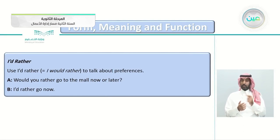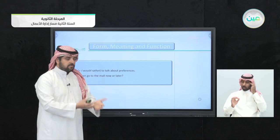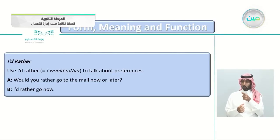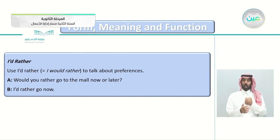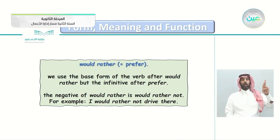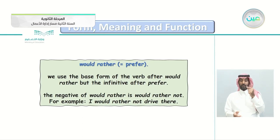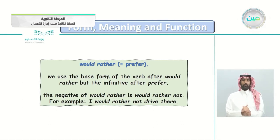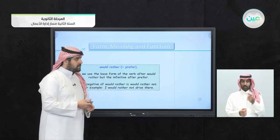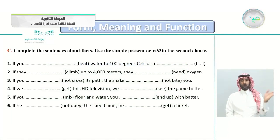'I'd rather' is short for 'I would rather,' used to talk about preferences — it means you choose to do something. For example: 'Would you rather go to the mall right now or later?' — 'I'd rather go now.' We use the base form of the verb after 'would rather,' but the infinitive after 'prefer.' The negative form is 'would rather not' — for example, 'I would rather not drive there.' You do not say 'I don't rather.'